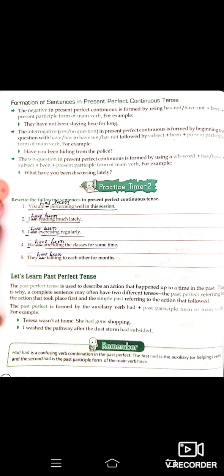Practice Time 2: Rewrite the following sentences in present perfect continuous tense. Example: 'Vikram is performing well in this season' becomes 'Vikram has been performing well in this season' — by adding 'has been', it shows Vikram is performing well since before and is still continuing to do so in this session.